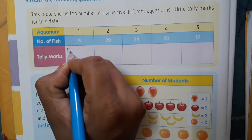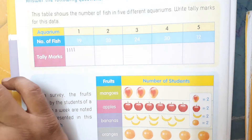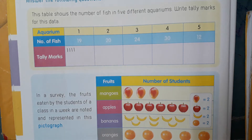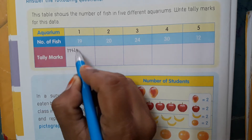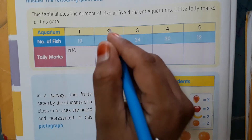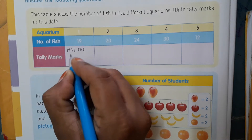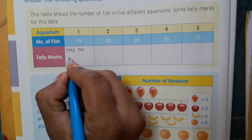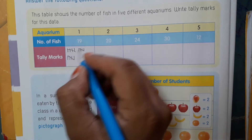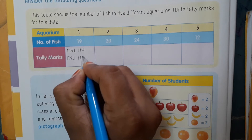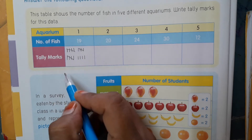Draw 4 lines, and for the 5th line we draw a diagonal line across. This bundle represents 5. We continue: 5, 10, 15, then 16, 17, 18, 19. So these are the tally marks for number 19.